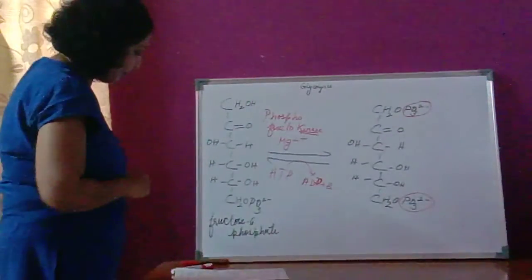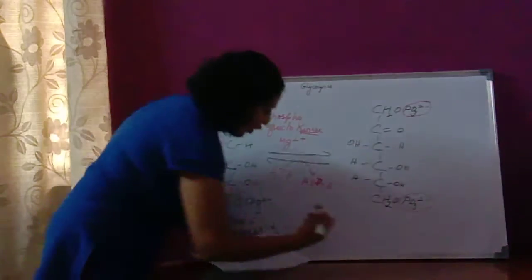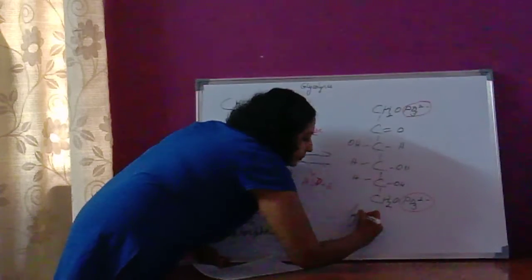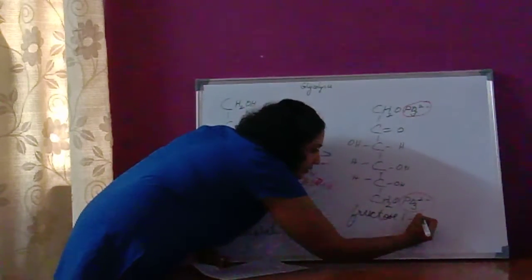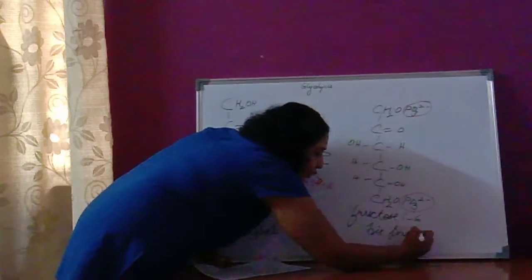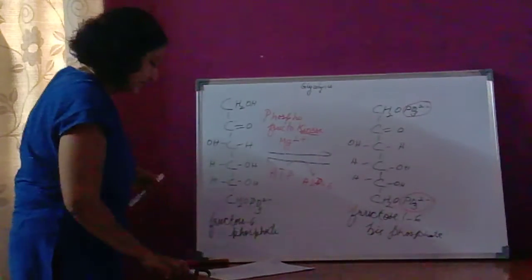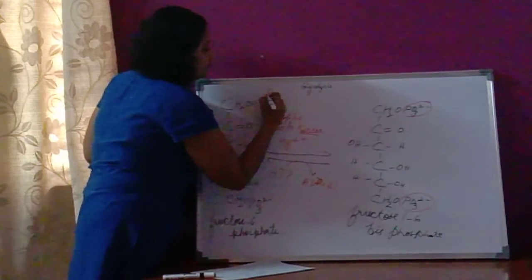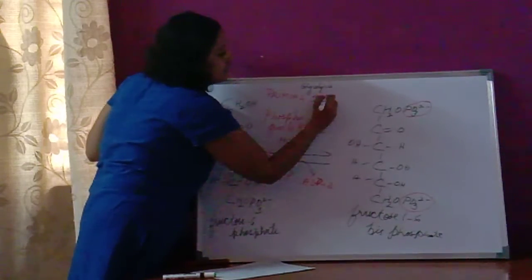This is called the priming stage. The structure formed here is fructose 1,6-bisphosphate. Till the formation of fructose 1,6-bisphosphate, it is called the priming stage.